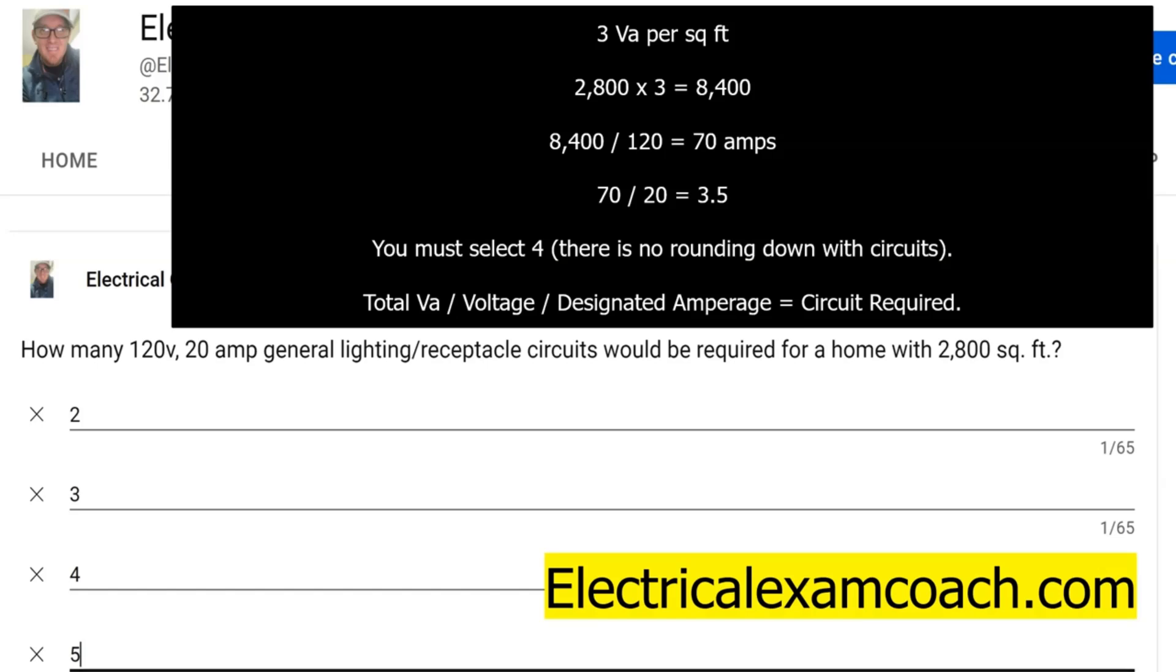Then we take that 8,400 and divide it by the circuit's voltage, which in this case is 120 volts. Then we take that, which is 70 amps, and divide it by the size of the circuit that we're wanting to do. In this case it's a 20 amp circuit, but if it was a 15 amp circuit you would divide by 15 instead.